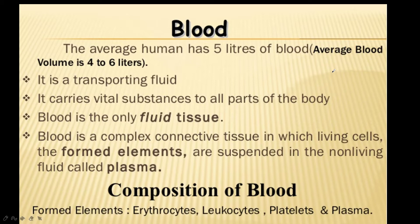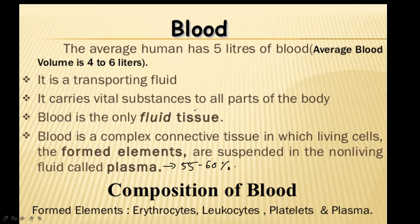About 55 to 60 percent of the blood is in the form of fluid called plasma. The remaining 40 to 45 percent is made up of cellular elements like erythrocytes, leukocytes, and platelets. Blood always moves away from the heart through arteries and back to the heart through veins. Blood is a transporting fluid which carries all vital substances to all parts of the body.